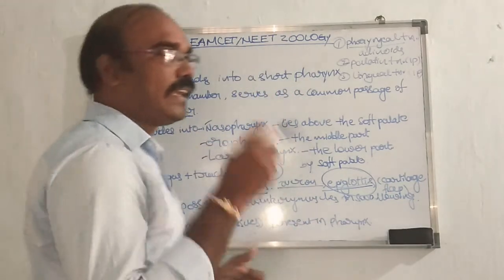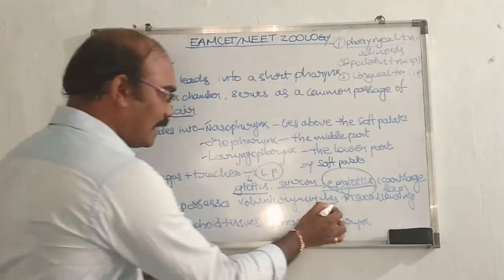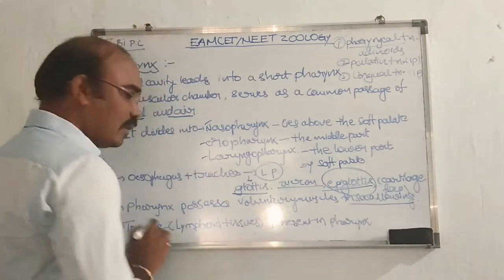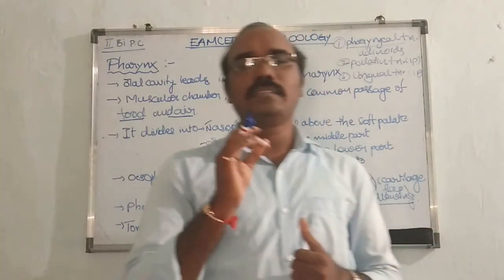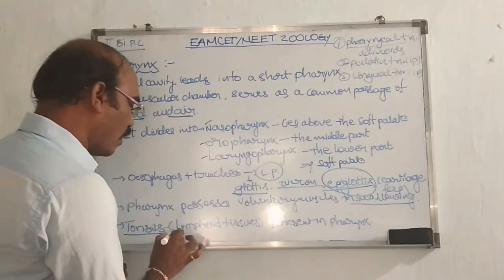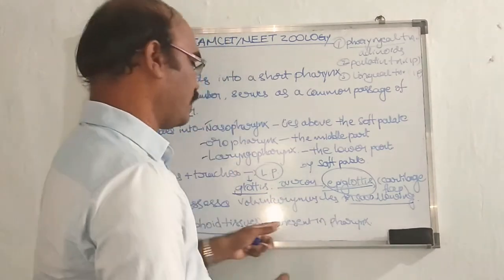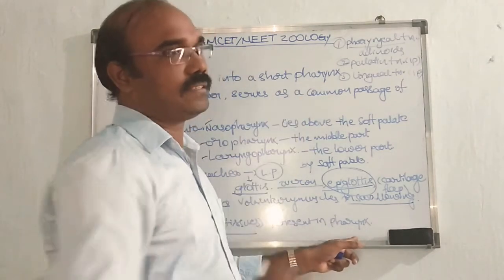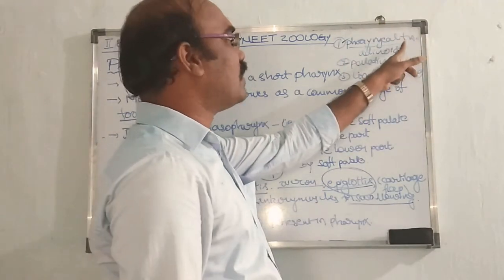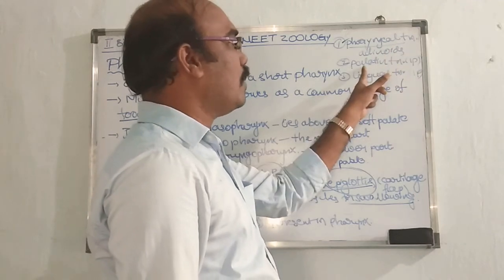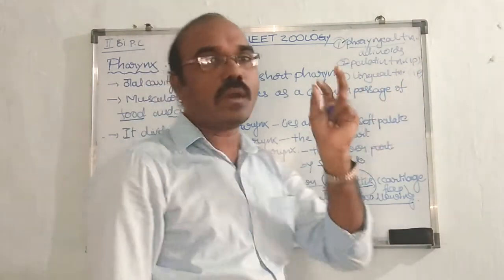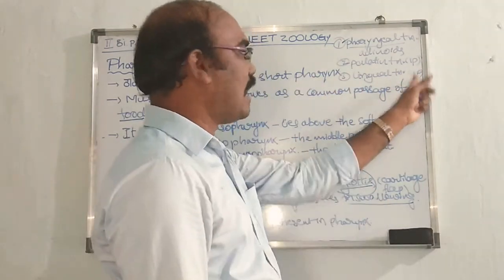The pharynx possesses an important muscle called voluntary muscles, useful for swallowing of food materials. The pharynx also contains important structures called tonsils, which are also called lymphoid tissues. These can be divided into three main types: pharyngeal tonsils or adenoids, palatine tonsils, and lingual tonsils.